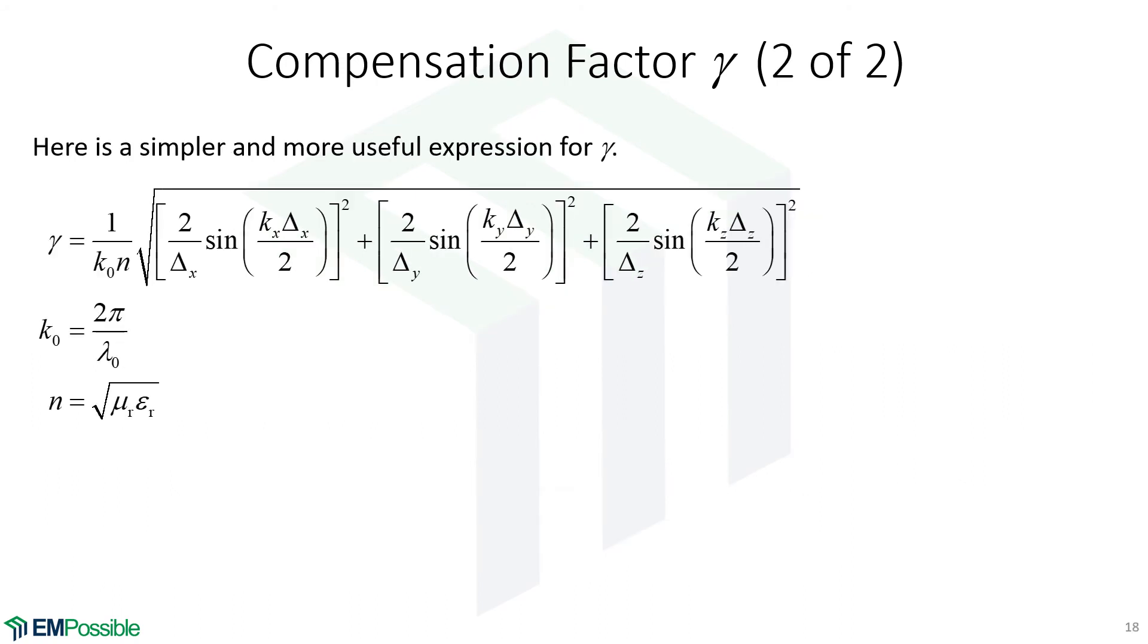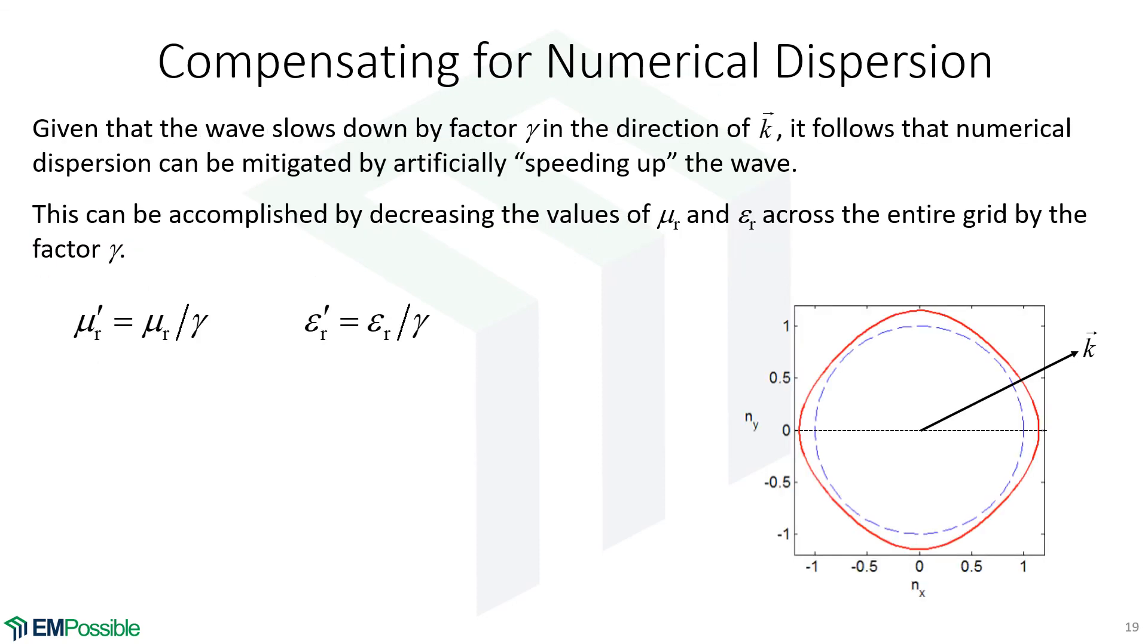Writing this slightly differently, we used to have an omega square root of mu times epsilon. I'm writing this now as a k naught times n, and I think this is a little bit closer to how it's used in practice. So refractive index, we will take maybe the average refractive index across the grid and calculate our compensation factor.